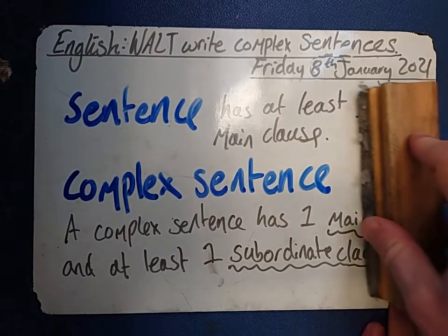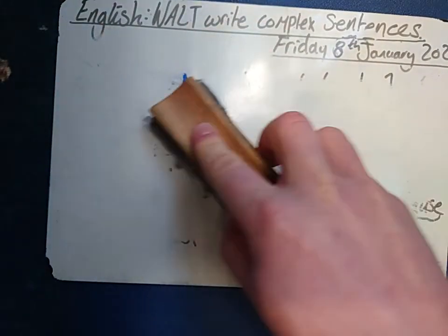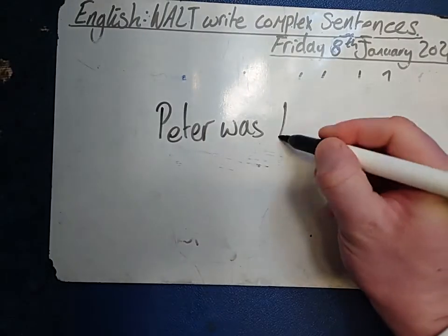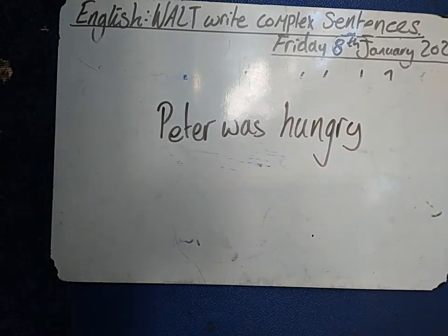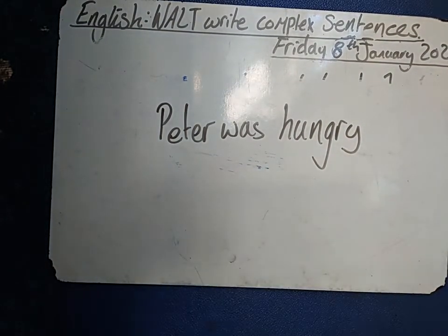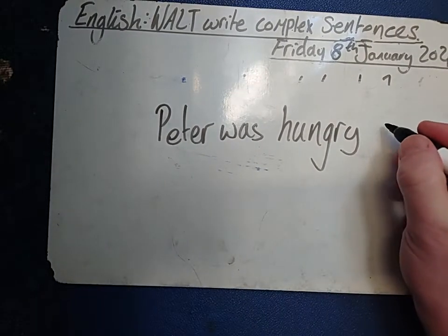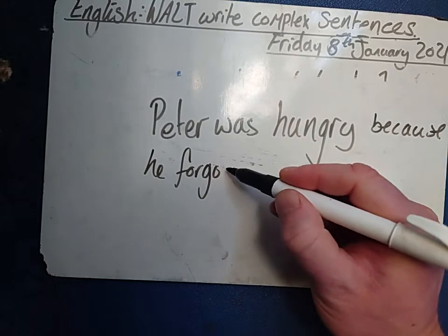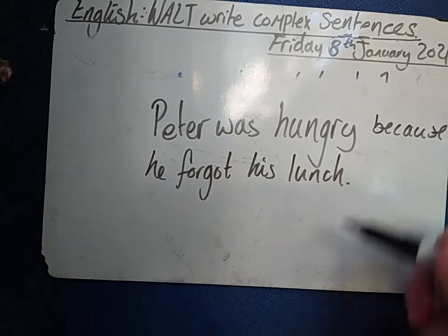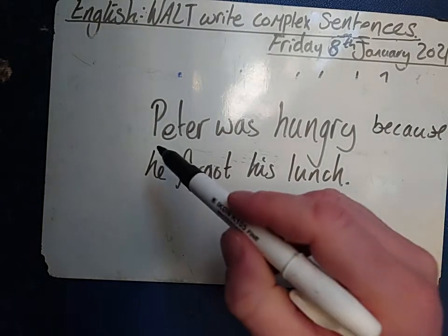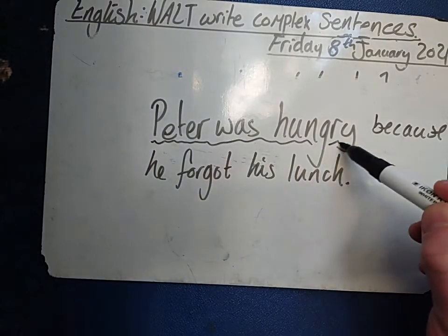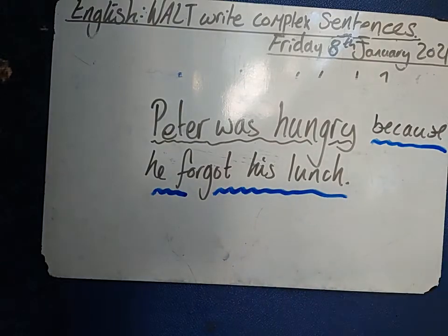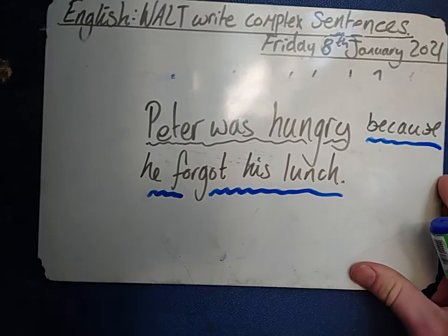Okay, if we go back to our original sentence, which was 'Peter was hungry' — that's our main clause. Now I can add an extra bit of information there which is less important. The main point is that Peter was hungry. But I could say 'Peter was hungry because he forgot his lunch.' Here we have the main clause — 'Peter was hungry' — and then the less important bit, which makes our sentence more interesting. 'Because he forgot his lunch' is the secondary bit of information.